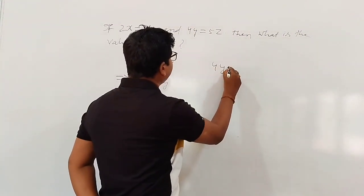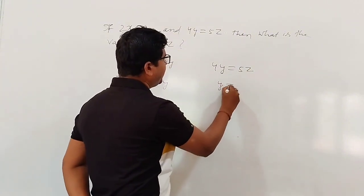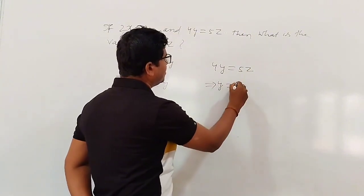Similarly, 4y equals 5z, then y equals 5 by 4z.